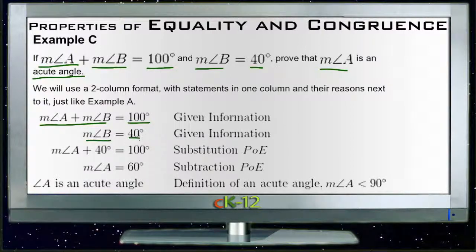We can just substitute then the fact that A + 40 = 100, since A + B = 100 and B = 40. So now we can use our substitution to say that A + 40 = 100.